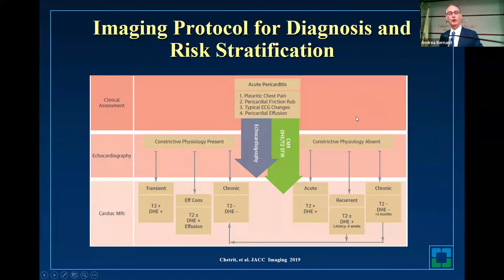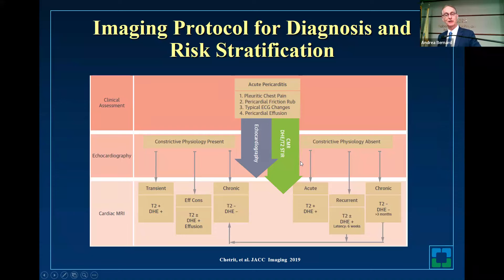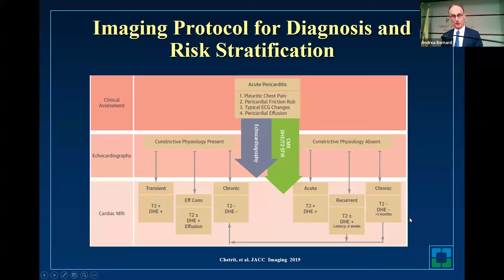In terms of our protocols, if you have acute pericarditis, you can do echo and/or CMR, and you try to decide whether constrictive physiology is present or absent, and try to plan where they sit in the spectrum of pericarditis based on the MRI and the echo.